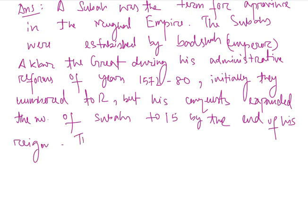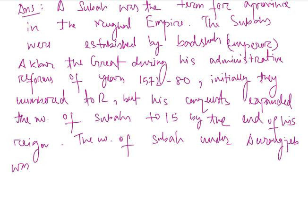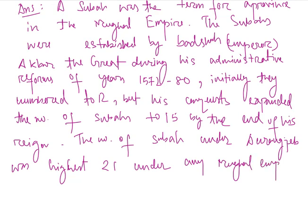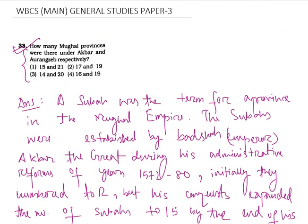By the end of his reign, the number of Subhas reached 15. The number of Subhas under Aurangzeb was the highest under any Mughal emperor, and that is 21. Therefore, the right answer is option 1: 15 and 21.